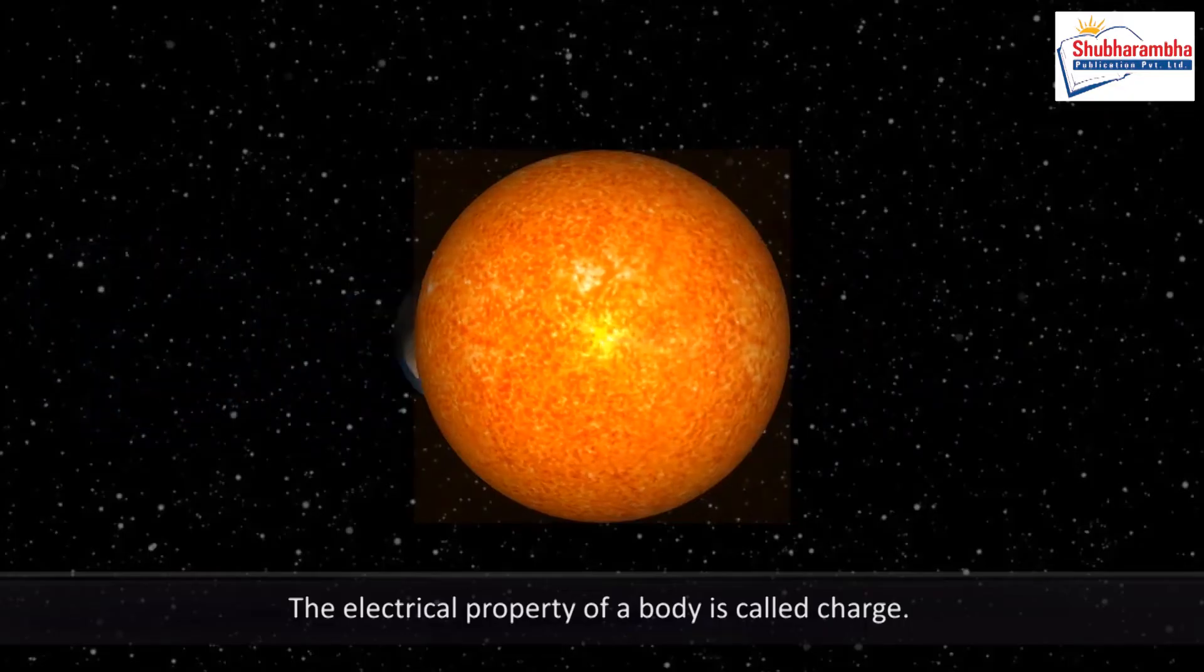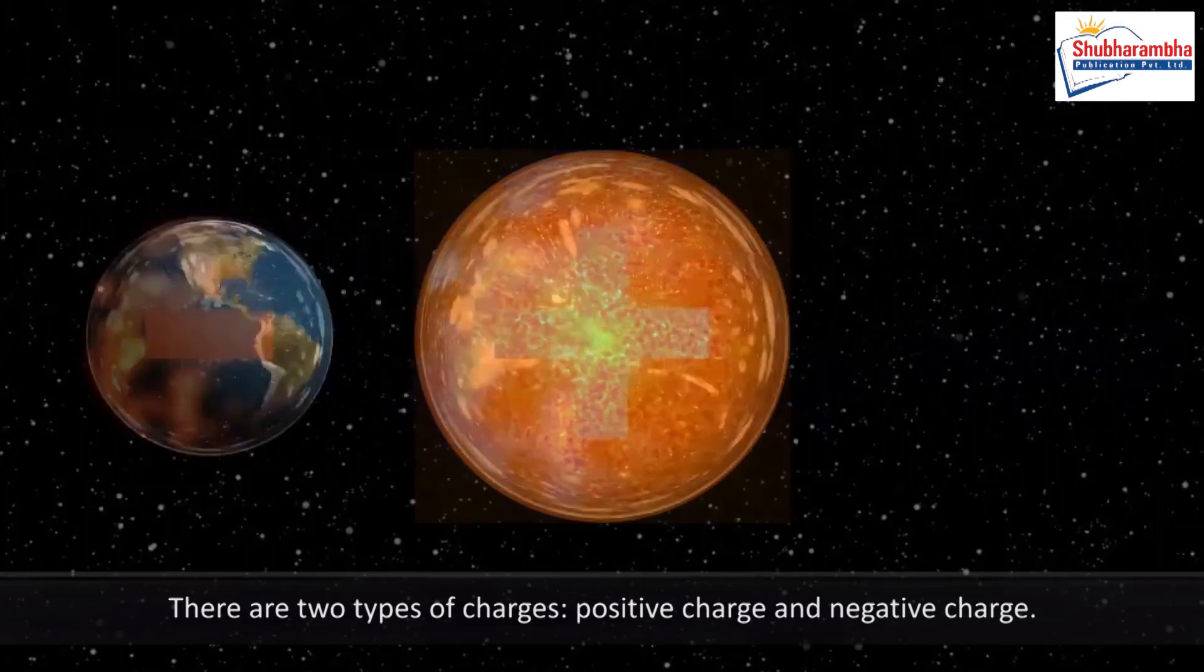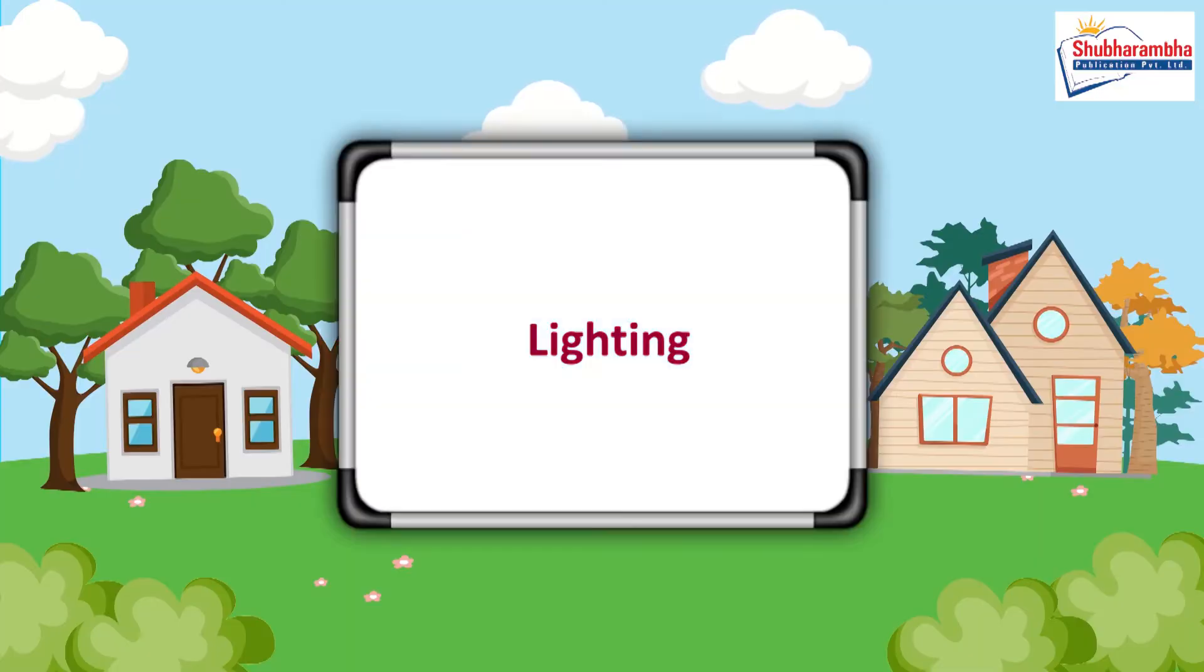Charge: The electrical property of a body is called charge. There are two types of charges: positive charge and negative charge.